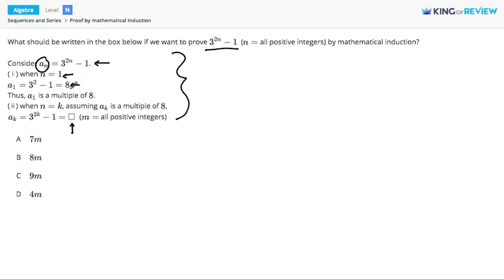And of course, 8 is a multiple of 8, so we have proven that a_1 is a multiple of 8. Now we're going to attempt to prove that more terms of this sequence are also multiples of 8.